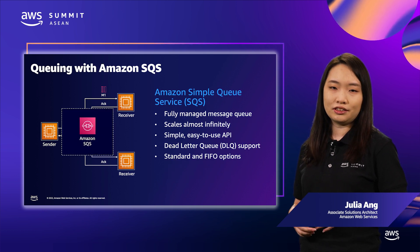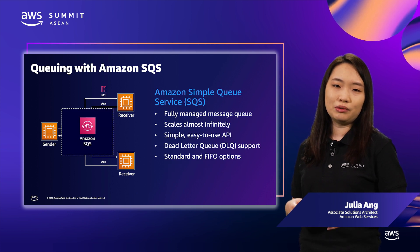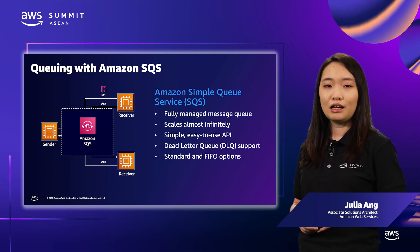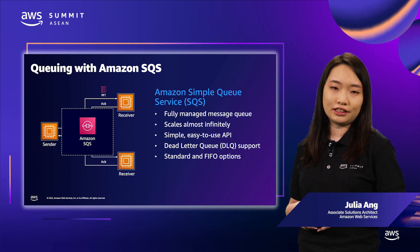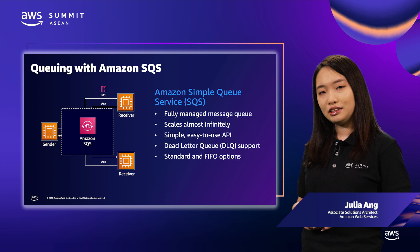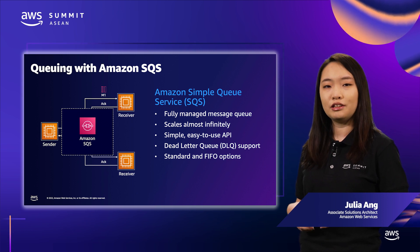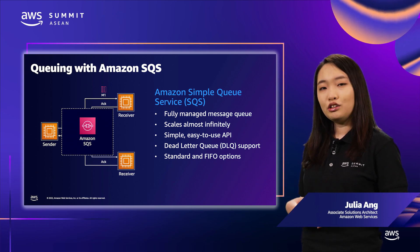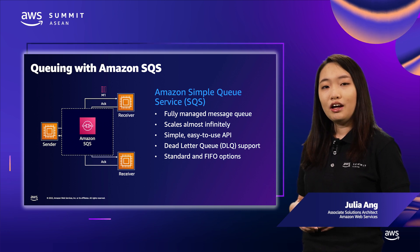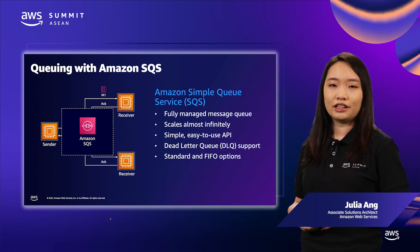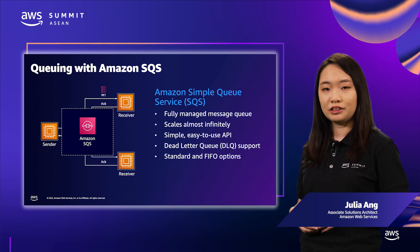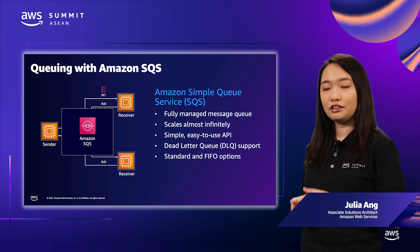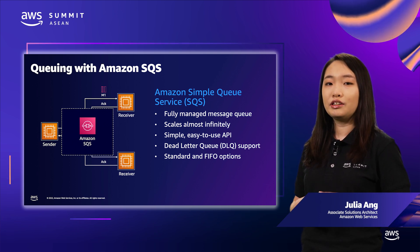There are two services you can use to implement a queue-based architecture on AWS. The first is Amazon SQS, which is serverless — completely managed, scales seamlessly, and you pay for value. If messages cannot be delivered or fail to be processed, you can send them to a separate queue called a dead letter queue, or DLQ.